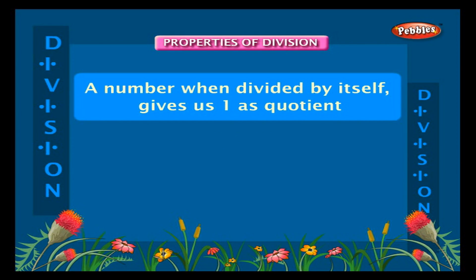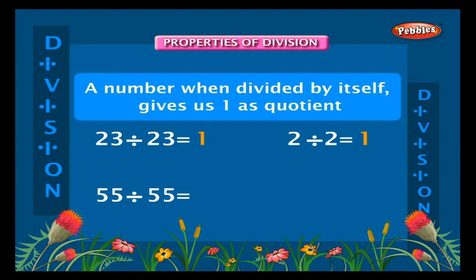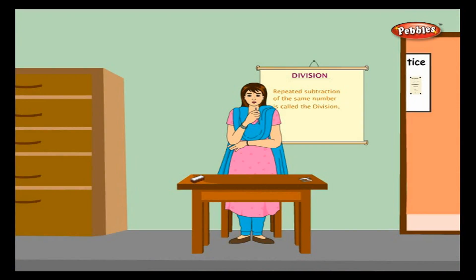Property two: division of a number by itself. A number when divided by itself gives us one as the quotient. For example, twenty-three divided by twenty-three is equal to one, two divided by two is equal to one, fifty-five divided by fifty-five is equal to one, eighteen divided by eighteen is equal to one, and so on.